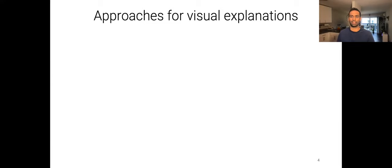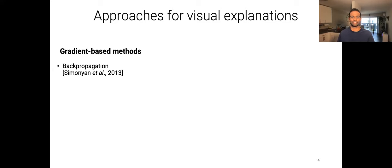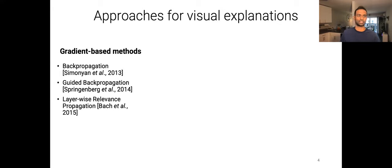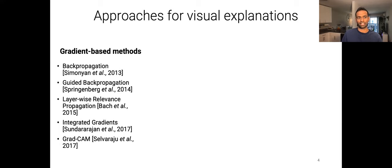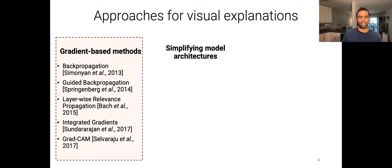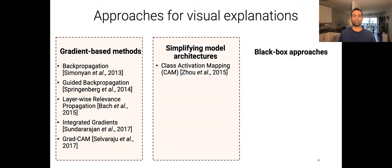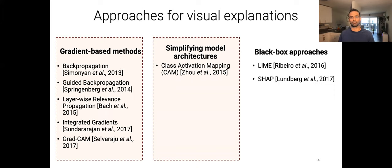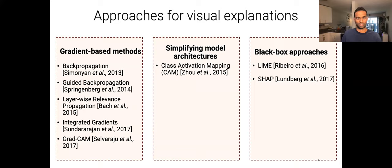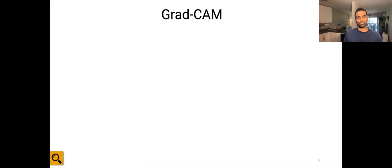Let's briefly look at some of the tools we have for this. The first set of approaches introduced were gradient-based methods such as backpropagation, guided backpropagation, layer-wise relevance propagation, integrated gradients, and GradCAM, among others. There were also works that tried to explain these models by simplifying the model architecture, for example class activation mapping. And there have been other approaches that consider the model as a black box, for example LIME or SHAP.